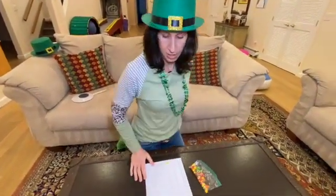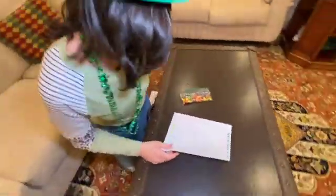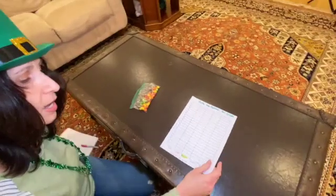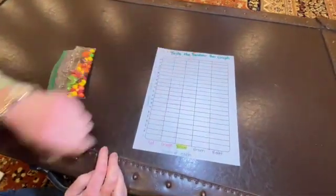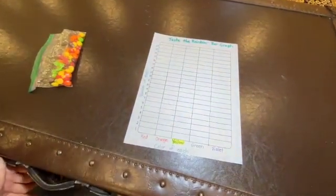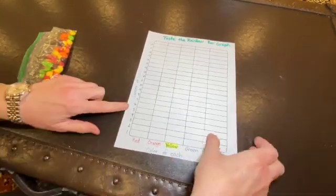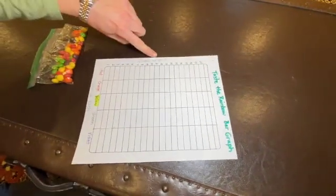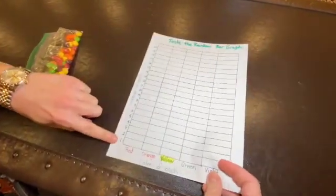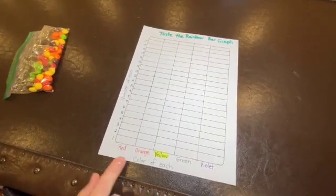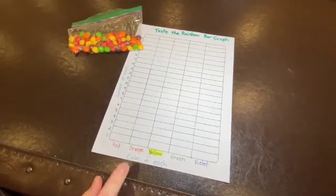You'll see I have a chart here. Now at the top it says taste the rainbow bar graph. I'm going to teach you how to do a bar graph. A bar graph deals with numbers and math. Along the side it says number of each, that's how many Skittles we have. I have numbered one through twenty. Along the bottom is color of each because in our bag we have all different color Skittles. We have red, orange, yellow, green, and violet.